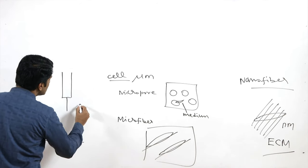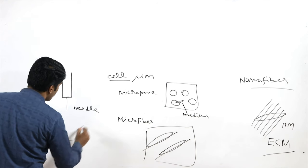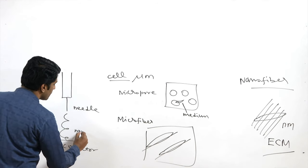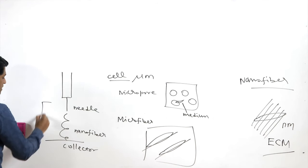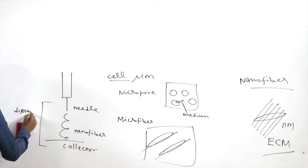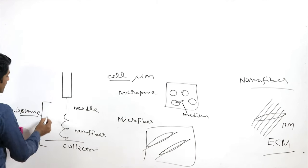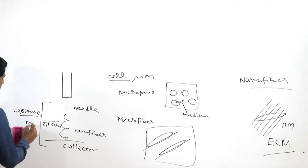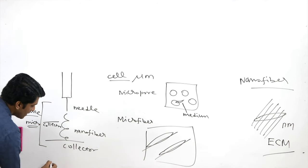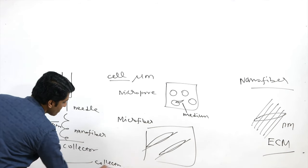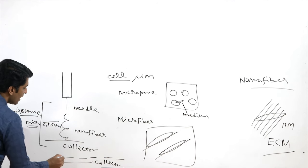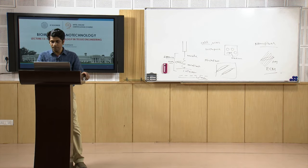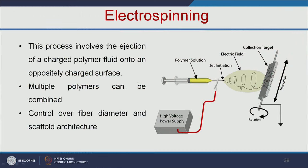If there is more distance between the spinneret needle and collector, you will get nanofibers. The distance between the spinneret and collector is very important. If you reduce this distance, you will get micro-size fibers. When the collector is moved further away, you will not get a continuous fiber — the fiber will have breaks.